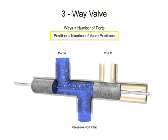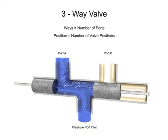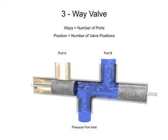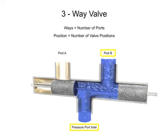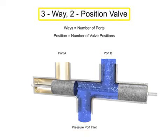The term position refers to the number of discrete operating positions of the internal valve element. For this spool valve, one position allows fluid to flow from the inlet to port A, and a second position allows fluid to flow from the inlet to port B. Therefore, this is a two-position valve.